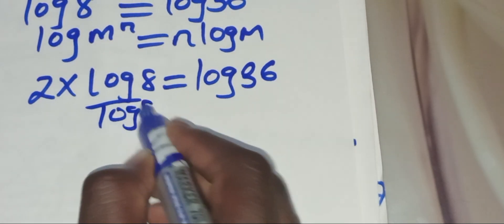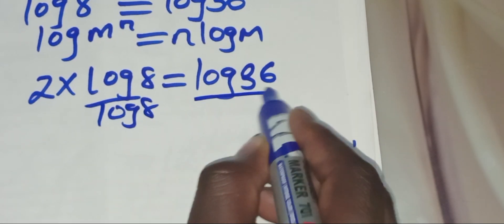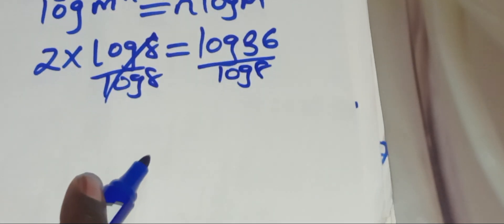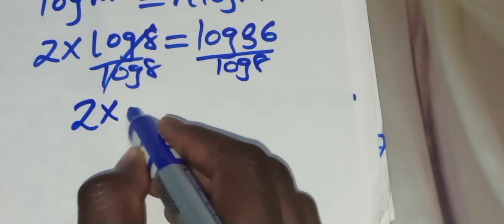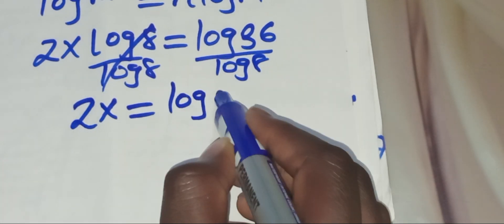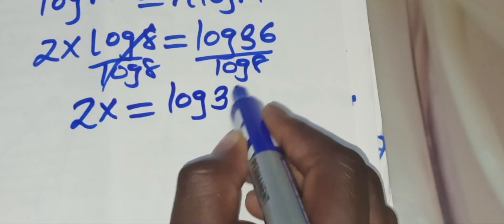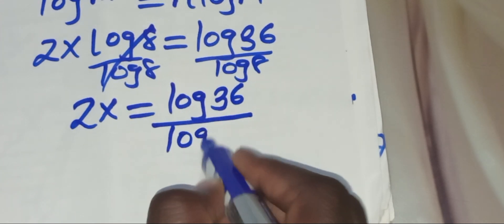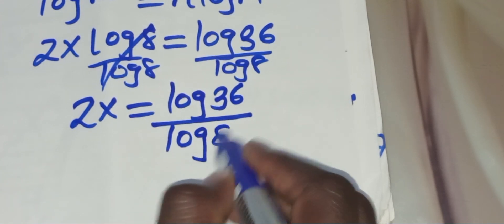Now we divide both sides by log 8, so that we'll have 2x equal to log 36 divided by log 8.